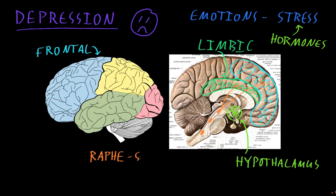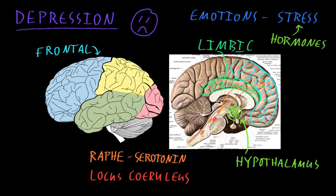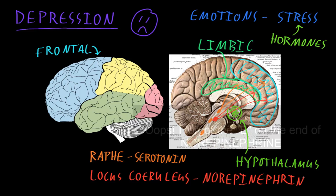The raphe nuclei are responsible for much of the serotonin that's secreted in the brain, which appears to be abnormal in many patients with major depressive disorder. Another pathway starts in an area called the locus coeruleus, located in the brain stem, which also sends long axons up to different areas of the cerebrum and releases a lot of the neurotransmitter called norepinephrine. This also appears to be abnormal in many patients with major depressive disorder.